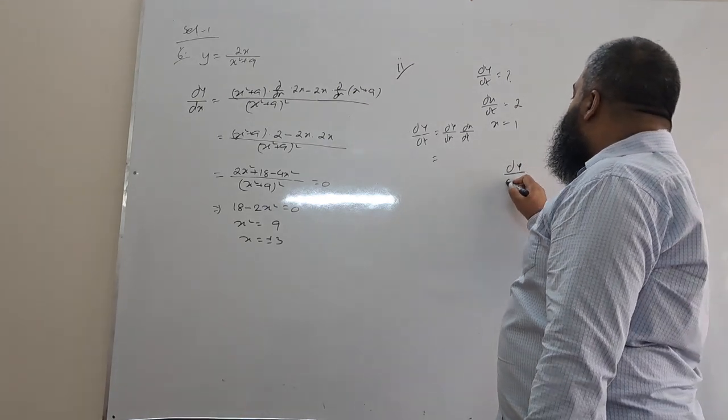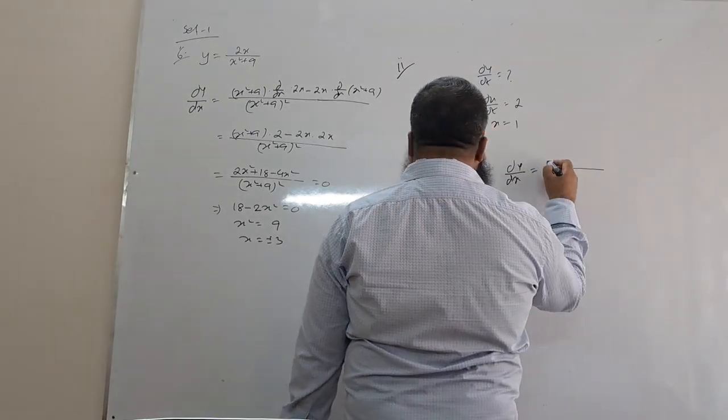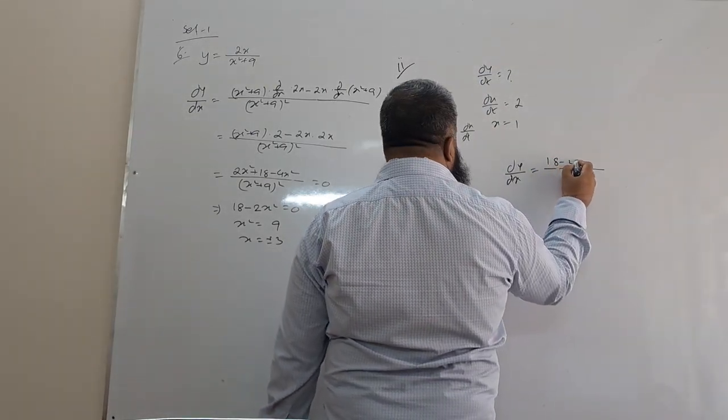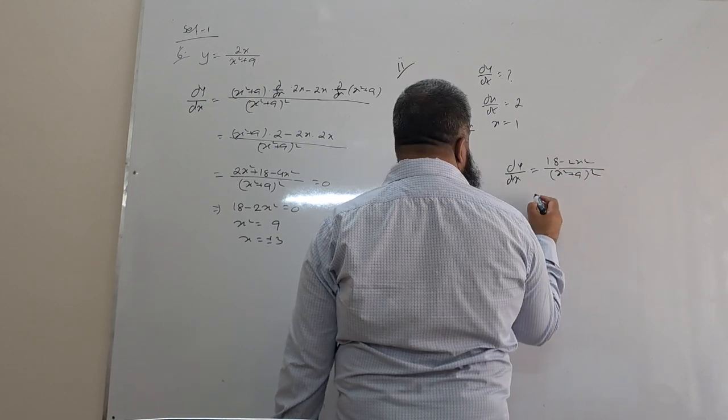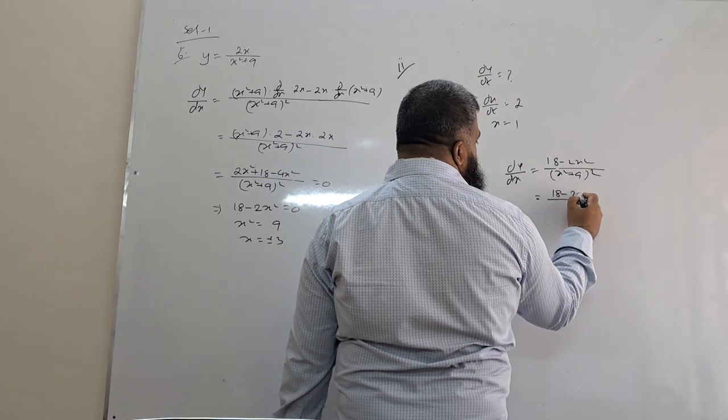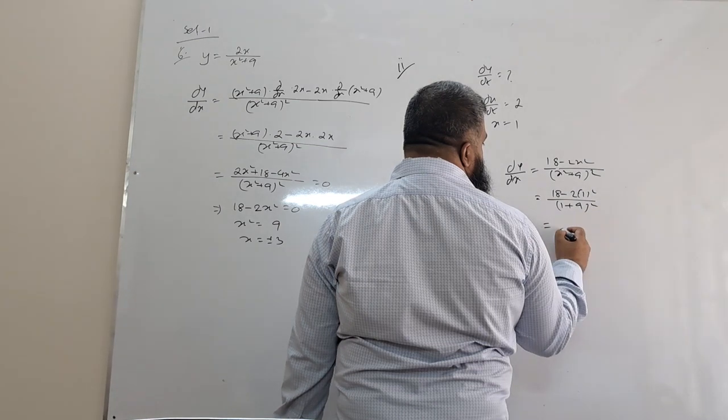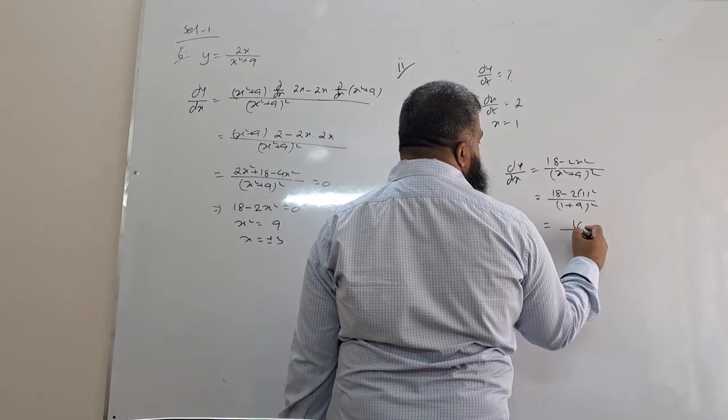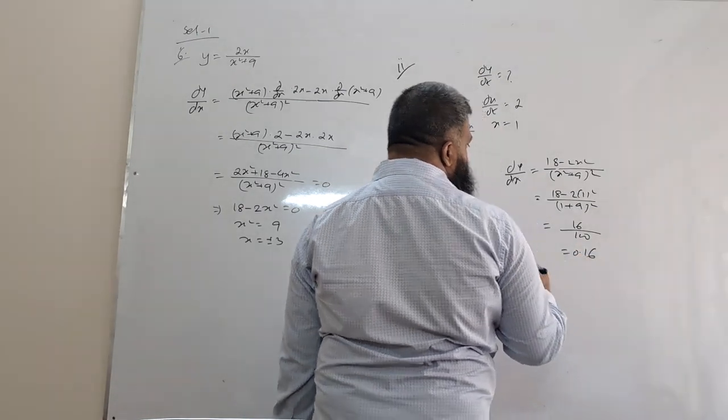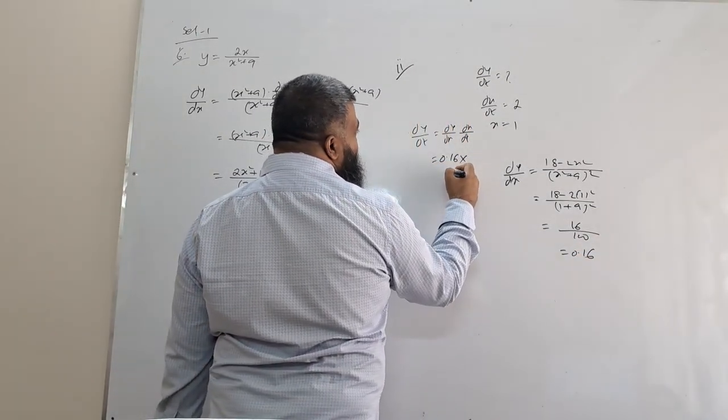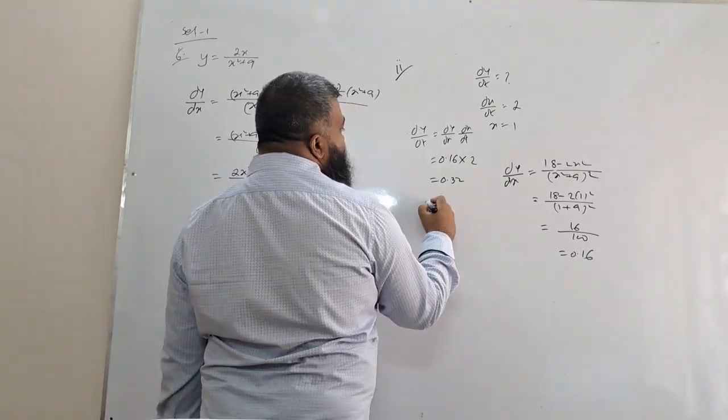dy/dt equals dy/dx when x equals 1. dy/dx is (18 - 2x²)/(x² + 9)². So when x = 1: (18 - 2×1²)/(1² + 9)² = (18 - 2)/(10)² = 16/100 = 0.16. So 0.16 multiplied by dx/dt which is 2, gives 0.32 units per second.